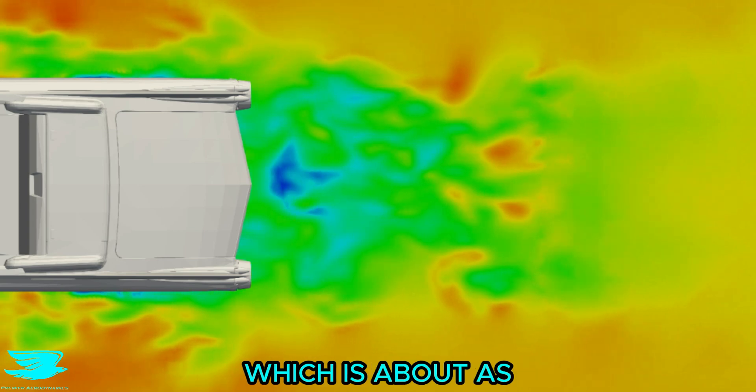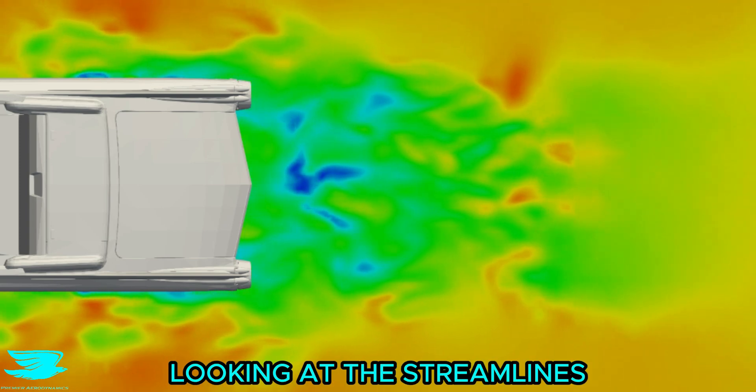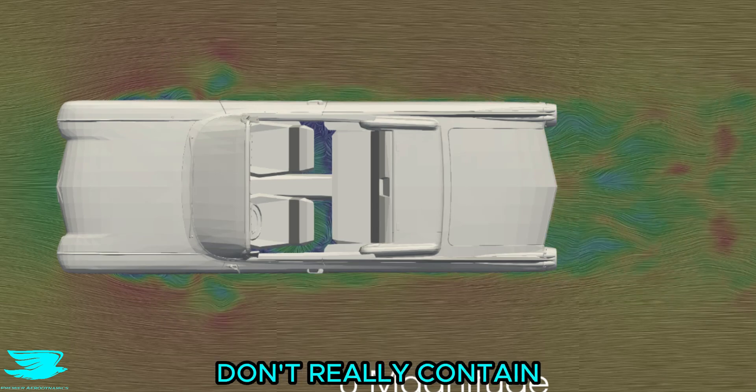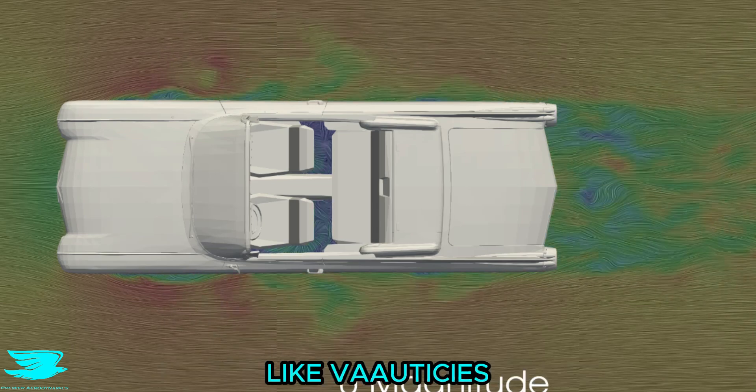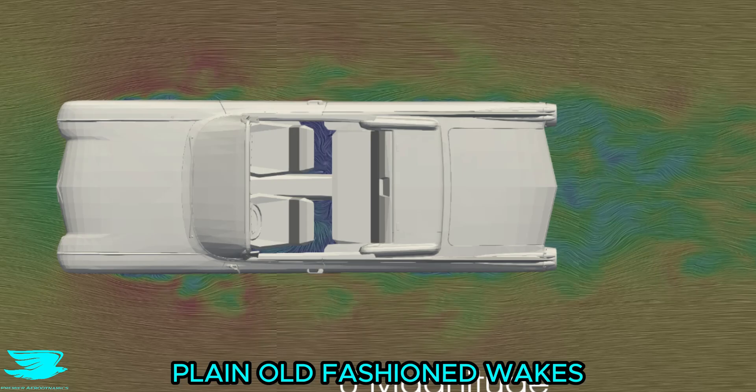And that is for the El Dorado, which is about as long as a football field, really. Looking at the streamlines, the wakes from the front wheels don't really contain any coherent flow features like vortices. They're pretty much just plain, old-fashioned wakes.